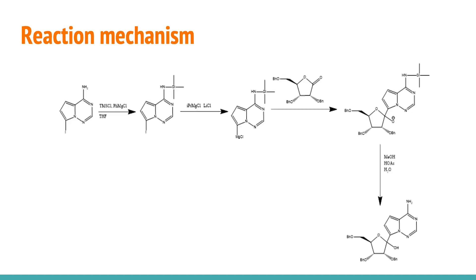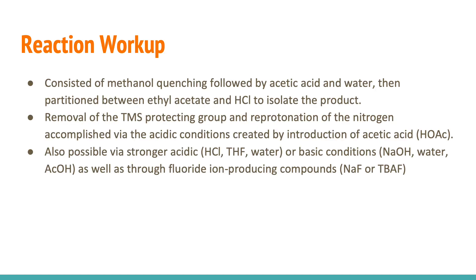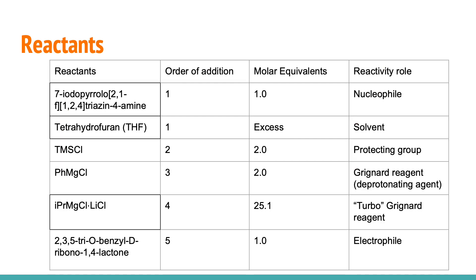The first step in this reaction is a protecting step, where the trimethylsilyl chloride group is added. After the addition of isopropyl magnesium chloride and lactone: pyrimidin-4-amine is added first with a molar equivalent of 1, acting as a nucleophile. Tetrahydrofuran is also added first as the solvent, in excess. Next, trimethylsilyl chloride is added with a molar equivalent of 2, serving as a protecting group. Then, phenylmagnesium chloride is added at a molar equivalent of 2, serving as a Grignard reagent and deprotonating agent. After that, the isopropylmagnesium chloride–lithium chloride complex is added at a molar equivalent of 2.5:1, acting as a turbo-Grignard reagent. Lastly, ribonolactone is added with a molar equivalent of 1, serving as the electrophile.